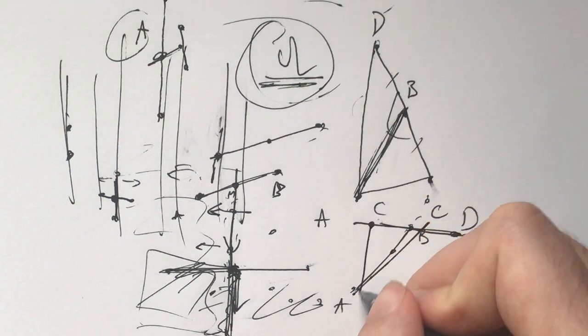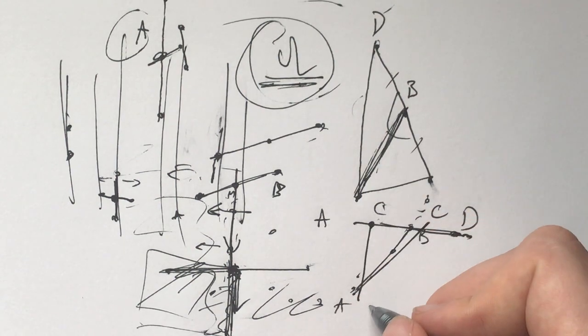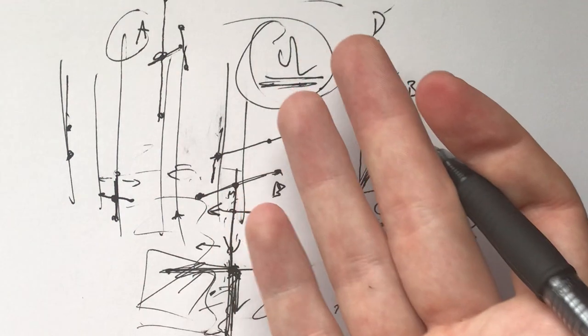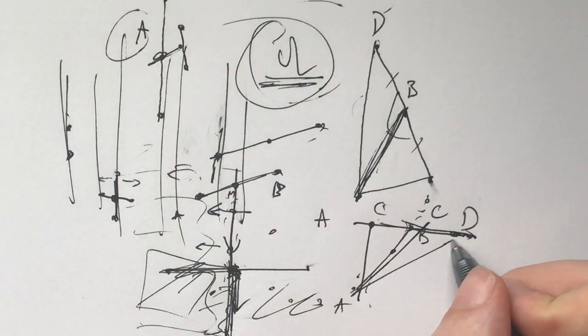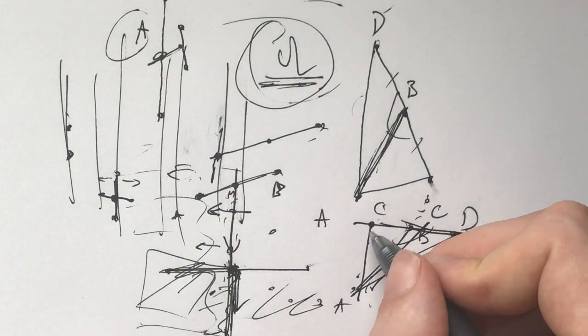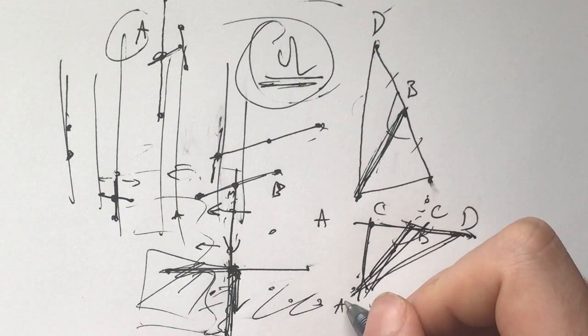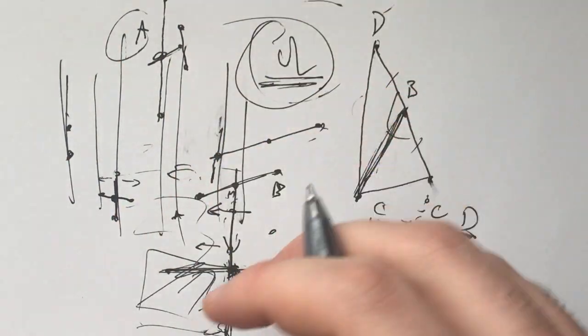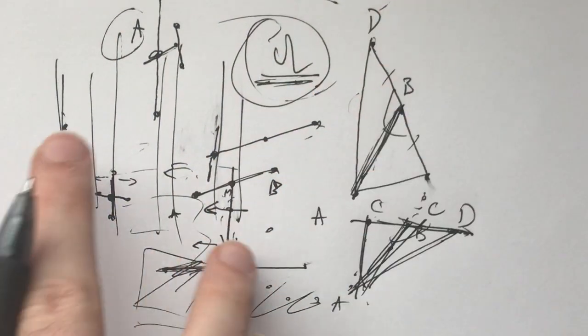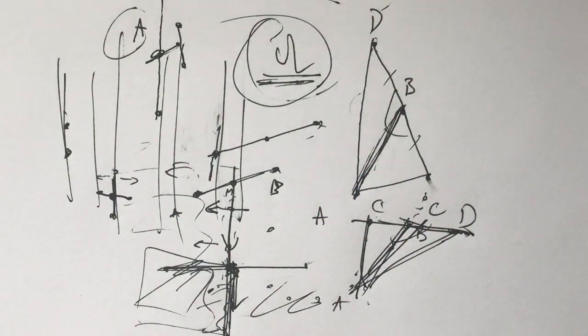One of the angles ABC or ABD is obtuse, and given that, this means that either AD or AC will be bigger than AB. Again, a contradiction.